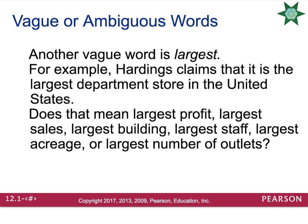Another vague word is 'largest.' For example, a store claims it is the largest department store in the United States. Does that mean the largest profit, the largest sales, largest building, largest staff, largest acreage, or largest number of outlets? You just don't know — they were very vague.